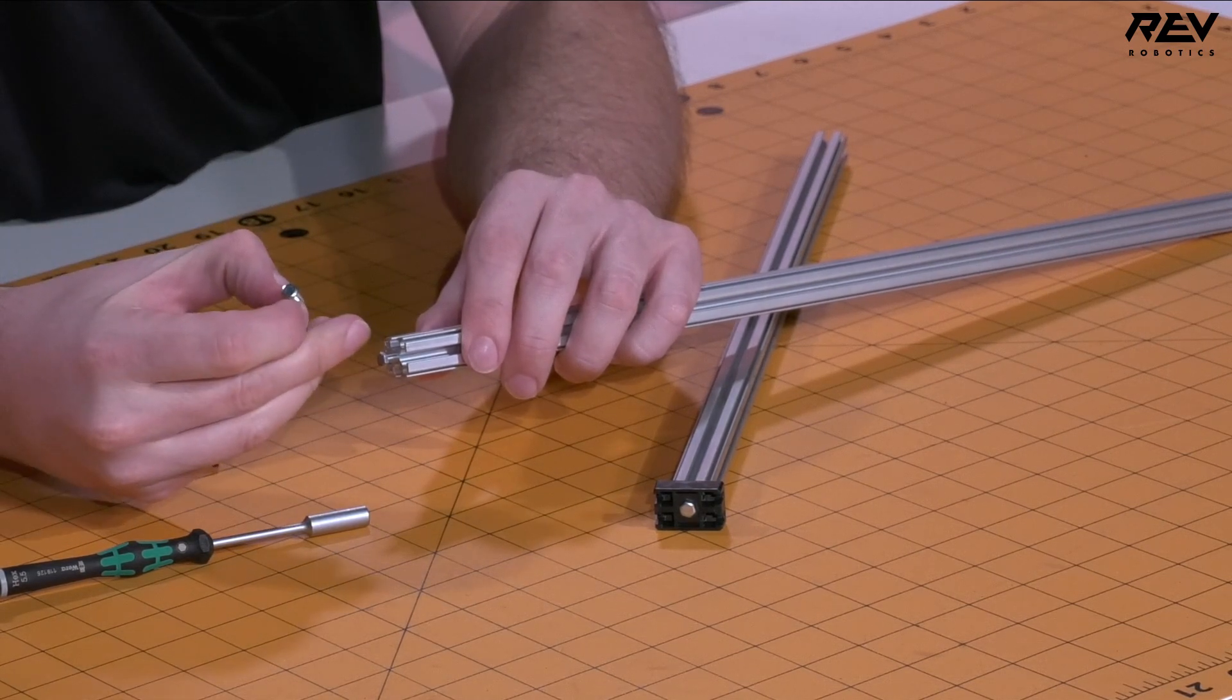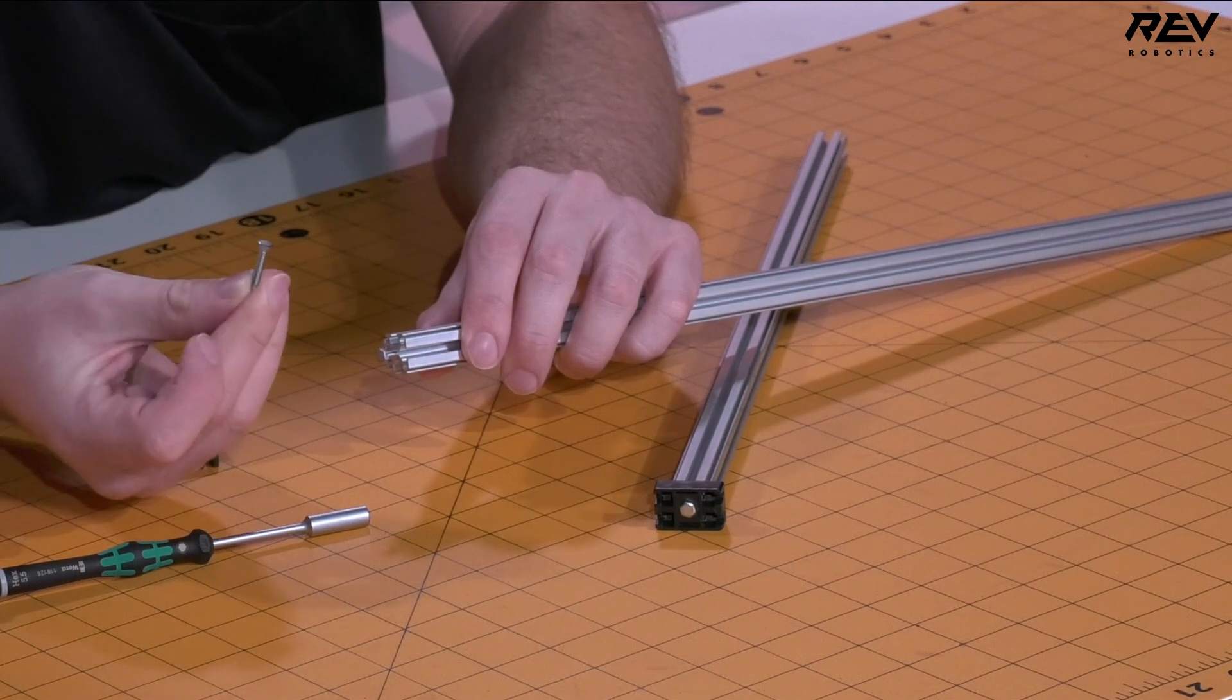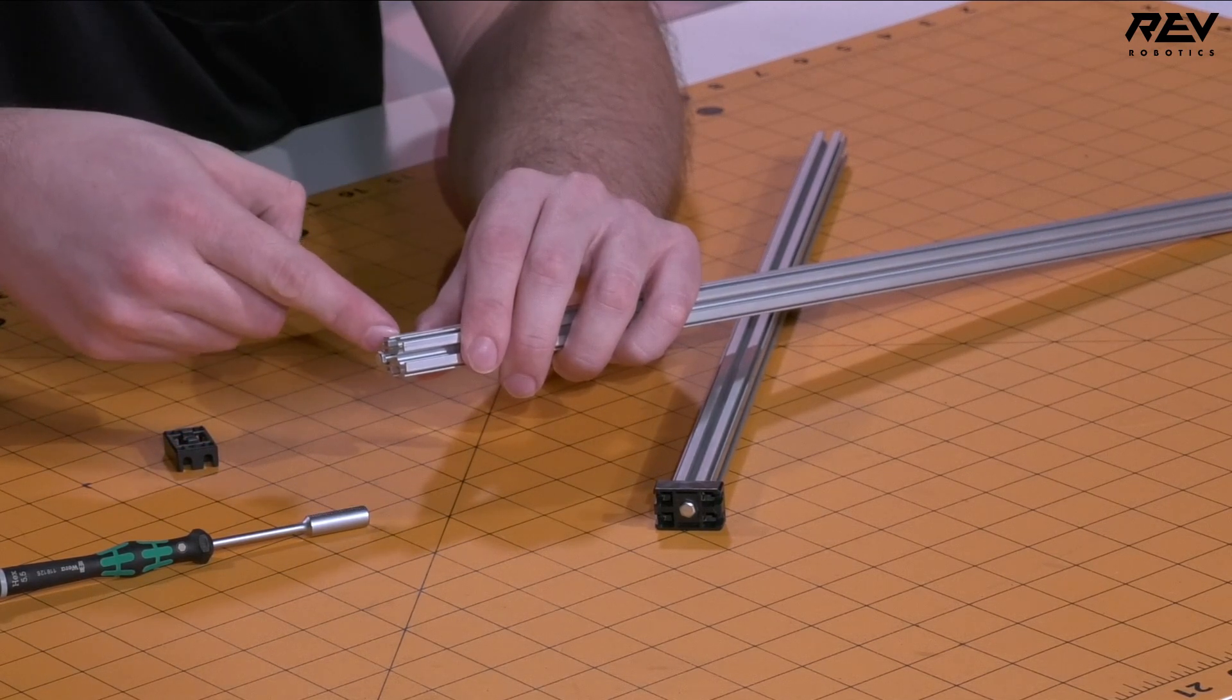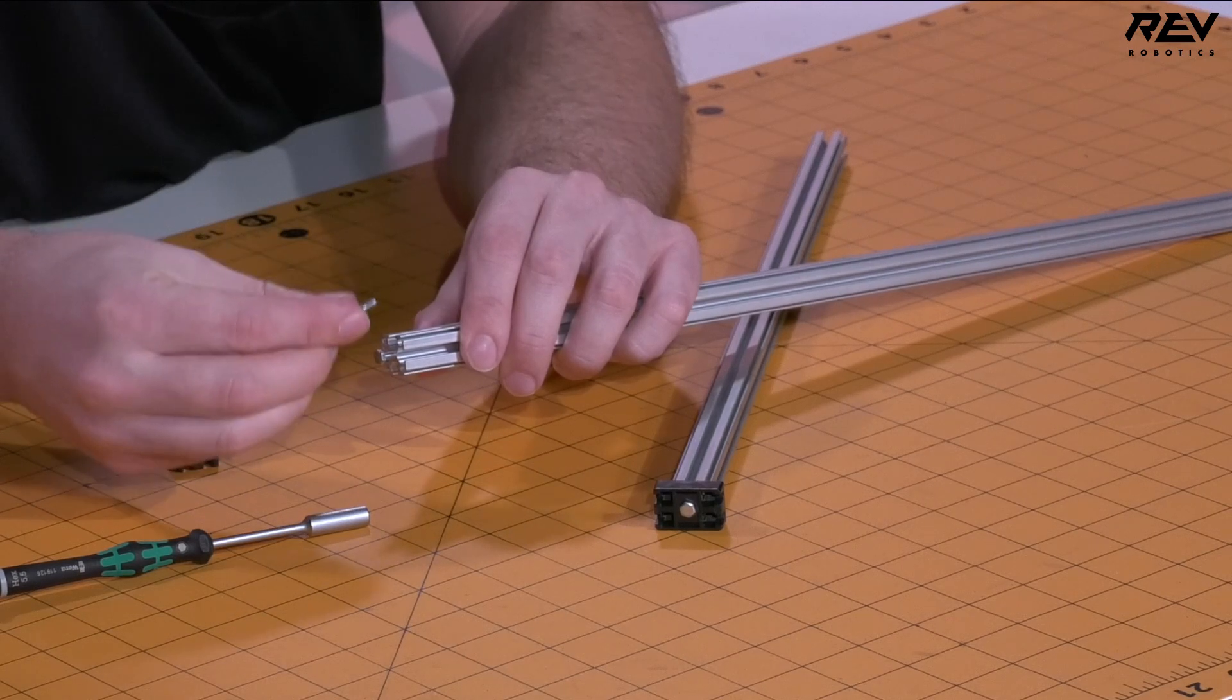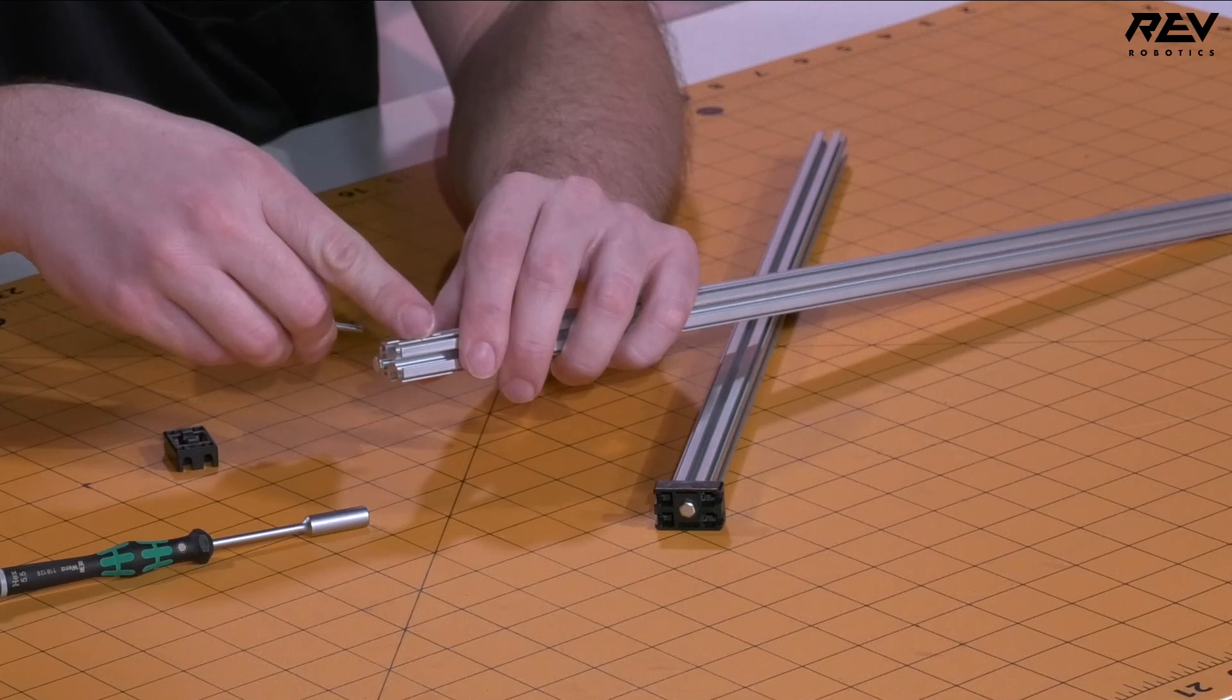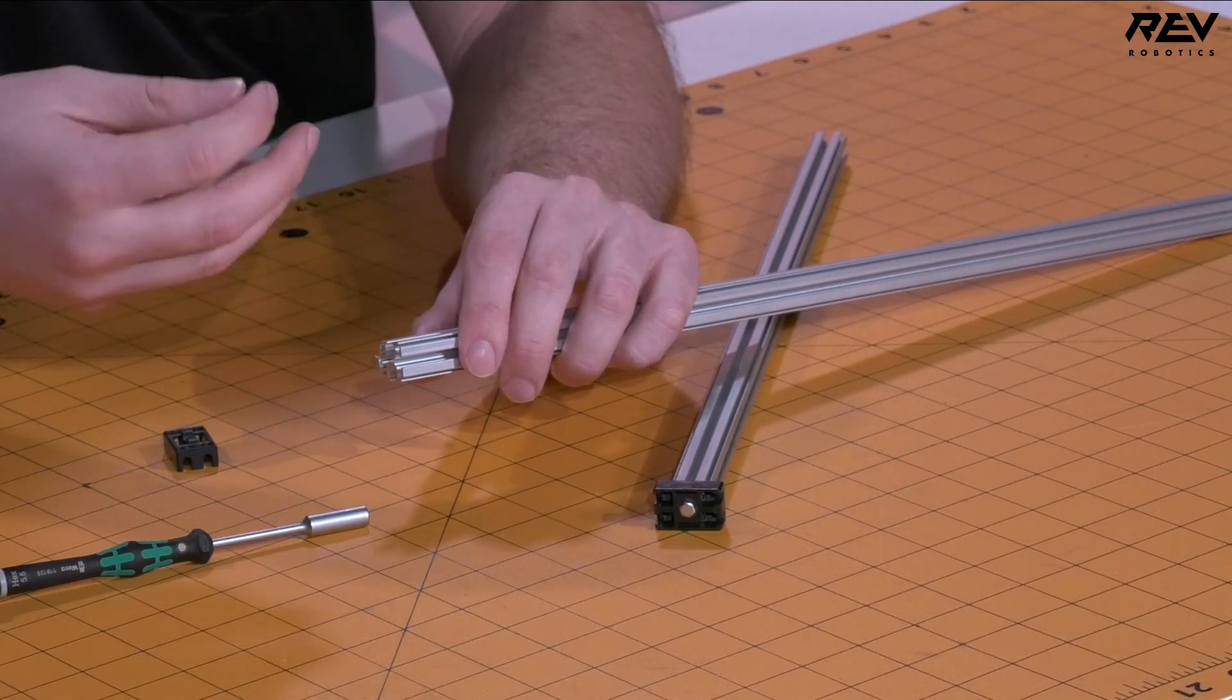Now this won't be the full way that you need to go down the extrusion with your 16 millimeter long screw, but it will give you a good starting point so you can get enough of the thread from your 16 millimeter screw into the extrusion to attach the end cap on.